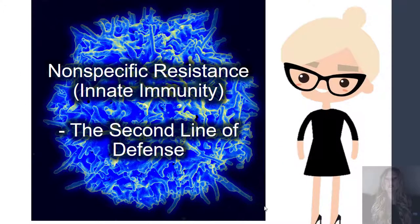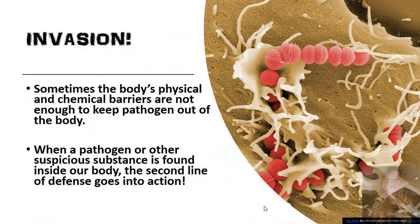Next, we'll discuss our body's second line of defense. This is the nonspecific resistance of the body — the innate immune system. Sometimes the body's physical and chemical barriers of the first line of defense are not enough to keep pathogens out of the body. When a pathogen or other suspicious substance is found inside our body, the second line of defense goes into action.